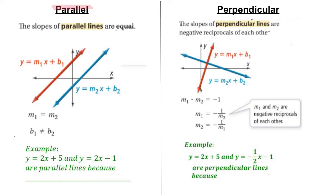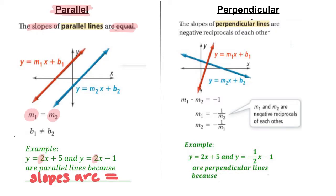Parallel lines have slopes that are equal. So looking at this example, these two lines are parallel because their slopes are identical. For example, y equals 2x plus 5 and y equals 2x minus 1 are parallel lines because the slopes are equal.